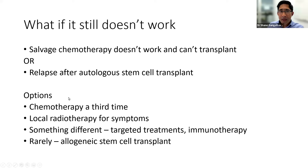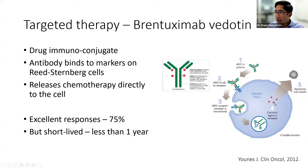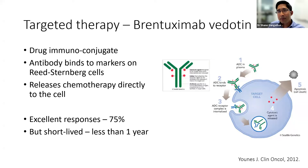One targeted treatment available in Australia is a drug called brentuximab vedotin — an antibody-drug conjugate. The Y-shaped antibody binds to markers on the Reed-Sternberg cell surface, with chemotherapy (the red dots) bound to it, directing the chemotherapy straight to the cell. It's given as an infusion every three weeks. About 75% of people have tumour shrinkage and it's well tolerated because it's very targeted. However, eventually patients still progress — usually within a year — so it's a potential option but not curative.